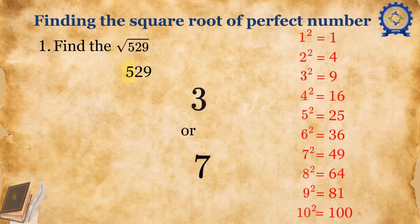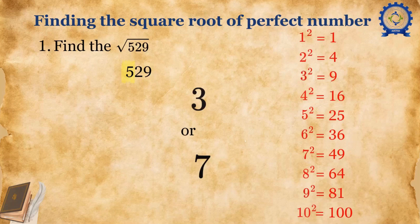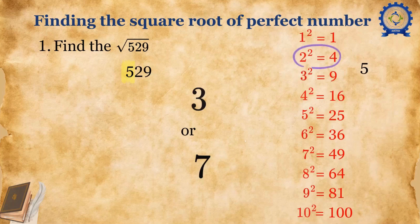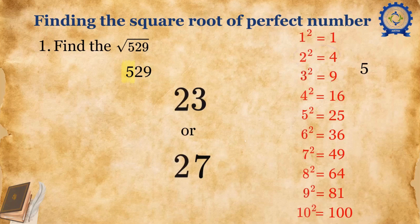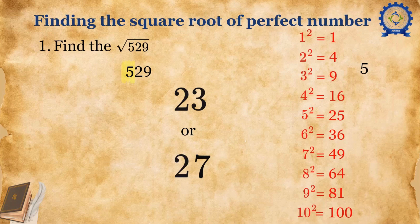Next is to see 5. Five comes in between 4 and 9. Consider the top value, that is 2² = 4. So we'll write 2 at the tens place. Now we have two answers: 23 or 27.